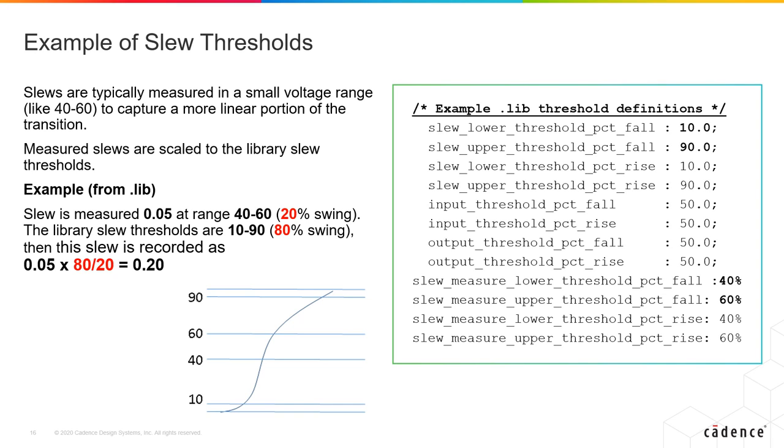From the library, we have an example here where slew is measured as 0.05 at the 40 to 60 range. So, it's a 20% swing. And the library slew thresholds are 10 to 90, which is an 80% swing.